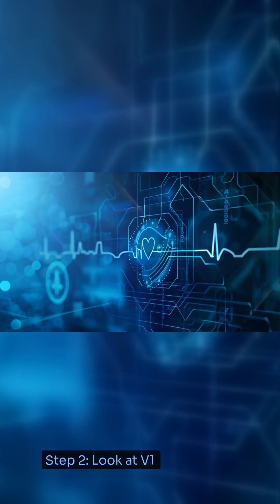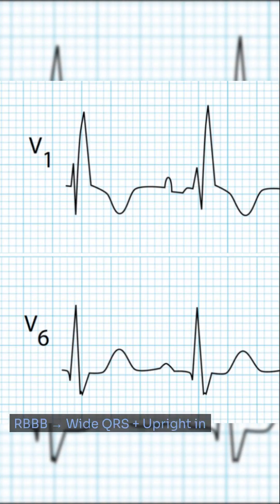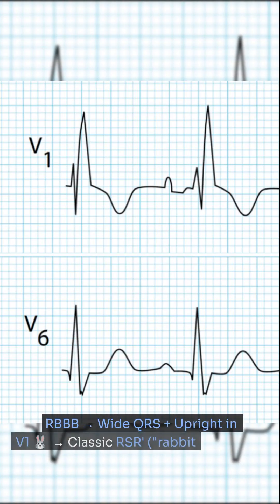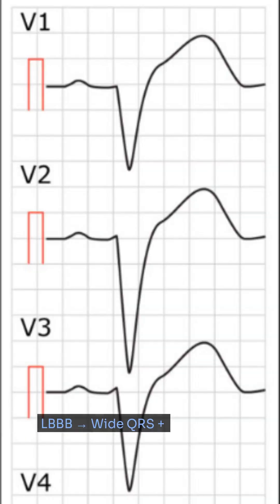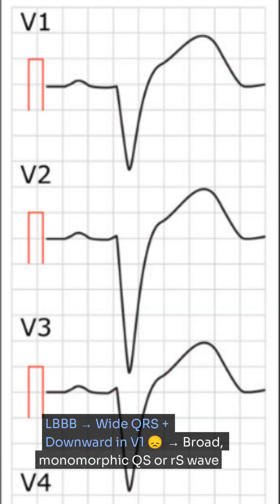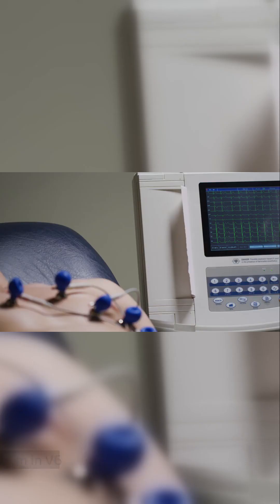Step 2: Look at V1. RBBB — wide QRS plus upright in V1, classic RSR prime, rabbit ears. LBBB — wide QRS plus downward in V1, broad monomorphic QS or RS wave.